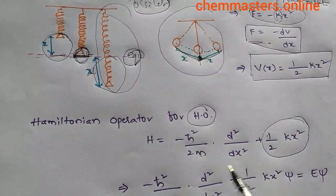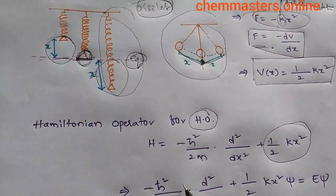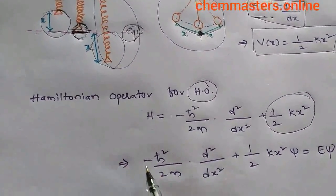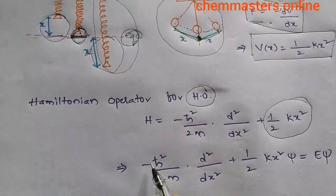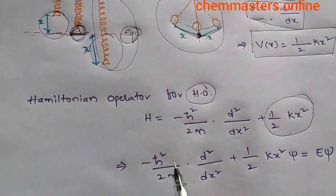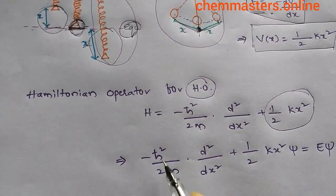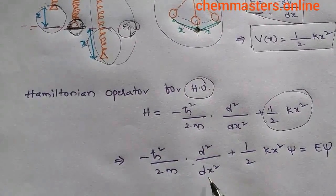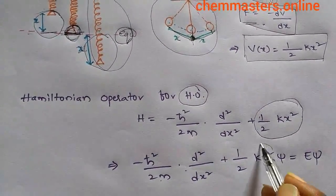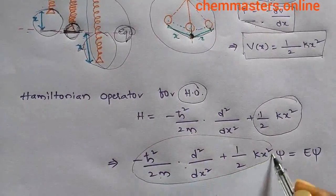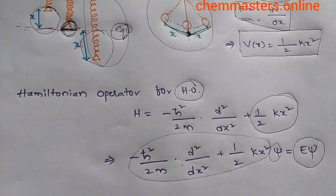The Schrödinger equation for the harmonic oscillator is given as: [−(ℏ²/2m)(d²/dx²) + ½kx²]ψ = Eψ. This is the Schrödinger equation for the simple harmonic oscillator.